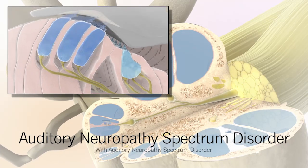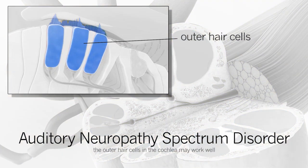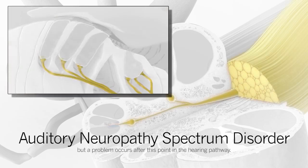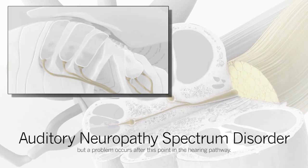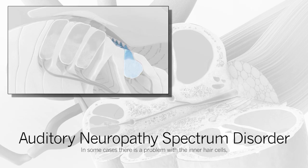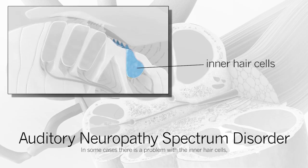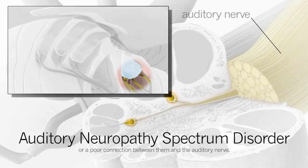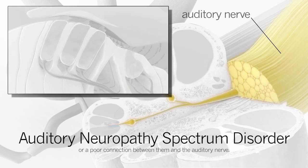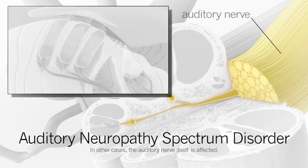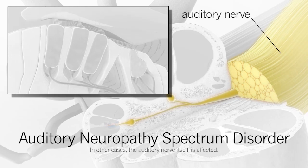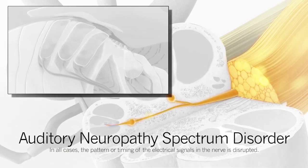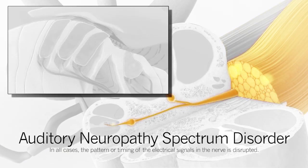With Auditory Neuropathy Spectrum Disorder, the outer hair cells in the cochlea may work well, but a problem occurs after this point in the hearing pathway. In some cases, there is a problem with the inner hair cells or a poor connection between them and the auditory nerve. In other cases, the auditory nerve itself is affected. In all cases, the pattern or timing of the electrical signals in the nerve is disrupted.